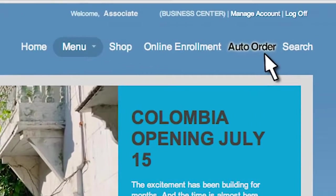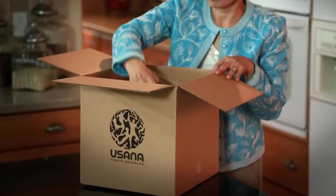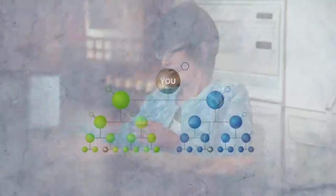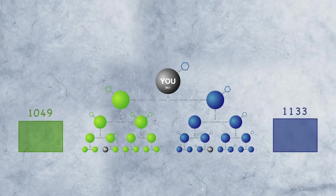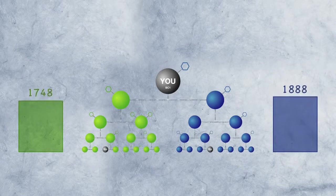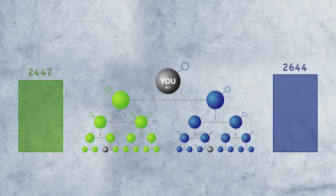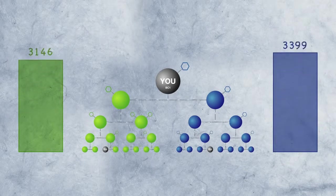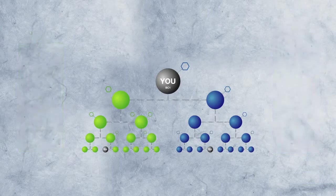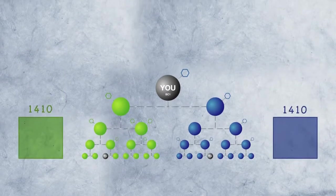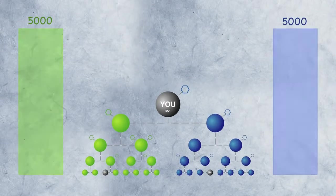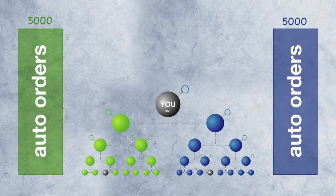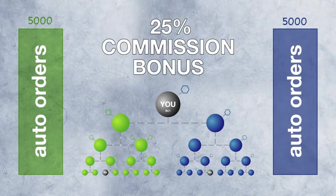Setting up auto orders is a convenient way to consistently receive your products every month. This is important for your health and for the health of your business. Automatic orders throughout your organization keep consistent sales volume flowing through your business centers, helping to ensure consistent commission checks each week. But that's not the only benefit of auto orders. Every time you max a business center with 5,000 left and 5,000 right, if the sales volume comes from auto orders, you will get a 25% bonus added to your commission.